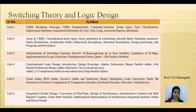Unit number 2 is Arrays and VHDL. It covers operations of arrays, entity declaration, behavioral description, and structural description — which are the types of VHDL style of modeling.